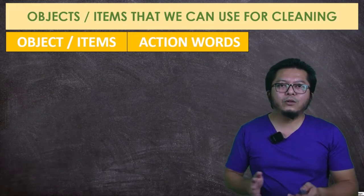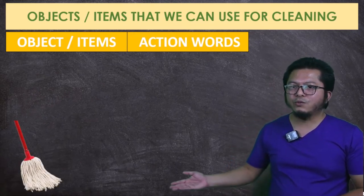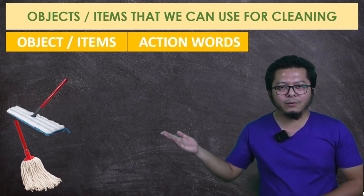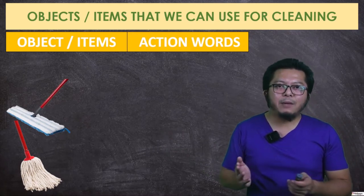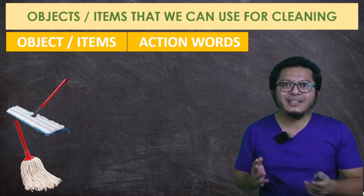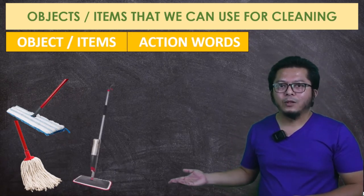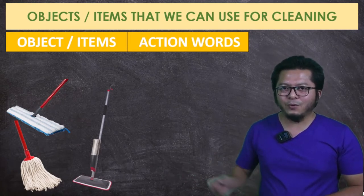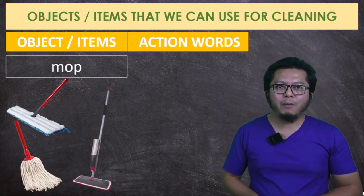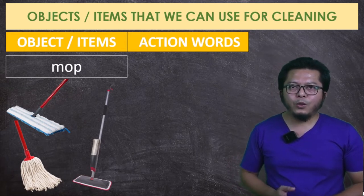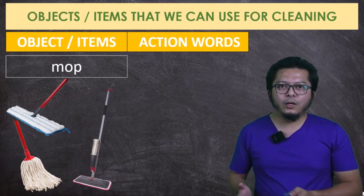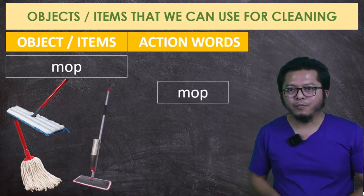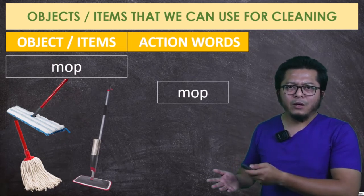Now moving on to another cleaning object. There are different designs, but the same thing — maybe you have the one with a sprayer at home. These objects are called a mop, M-O-P. When you want to use a mop, the action word that comes with this object is to mop. So you mop something with a mop.